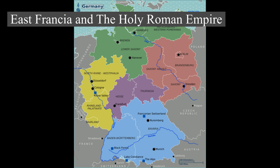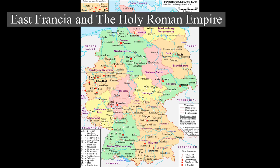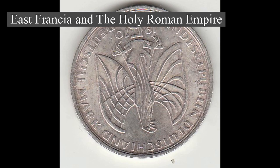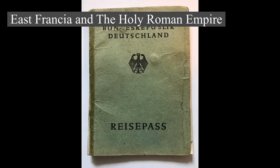The Holy Roman Empire absorbed northern Italy and Burgundy under the Salian emperors (1024–1125), although the emperors lost power through the investiture controversy. Under the Hohenstaufen emperors (1138–1254), German princes encouraged German settlement to the south and east (Ostsiedlung). Members of the Hanseatic League, mostly north German towns, prospered in the expansion of trade. The population declined starting with the Great Famine in 1315, followed by the Black Death of 1348–1350. The Golden Bull issued in 1356 provided the constitutional structure of the empire and codified the election of the emperor by seven prince-electors.